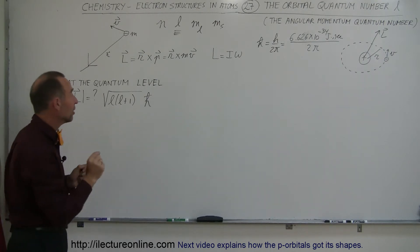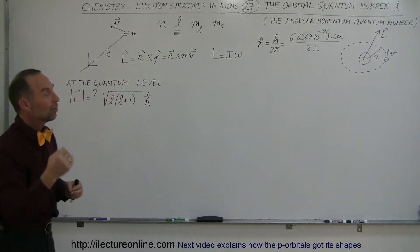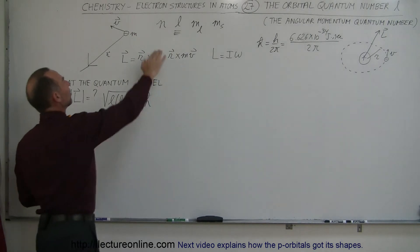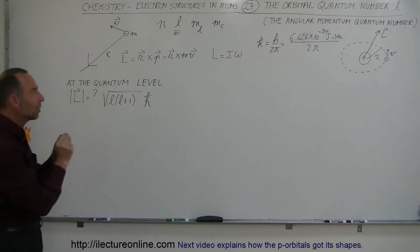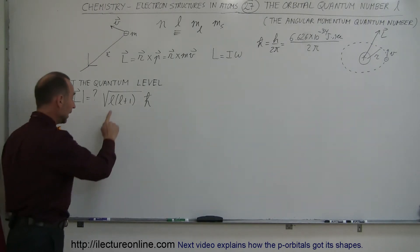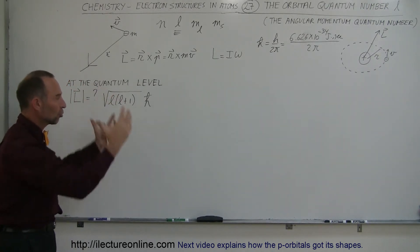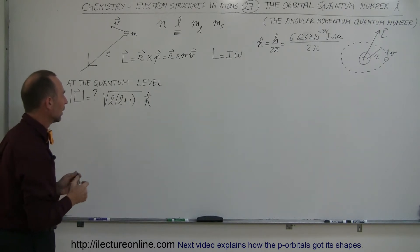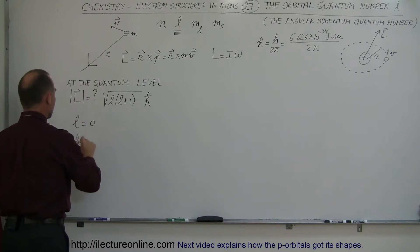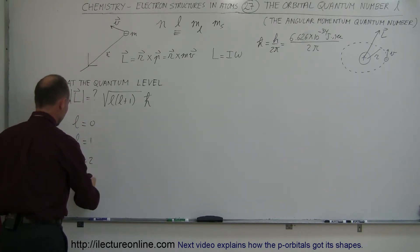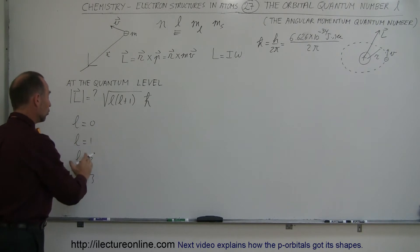That stepwise increase is defined by the letter L, which is one of the four quantum numbers — called the angular momentum quantum number. It defines how much angular momentum an electron can have. L can only be integers starting from 0, 1, 2, 3, and so forth.